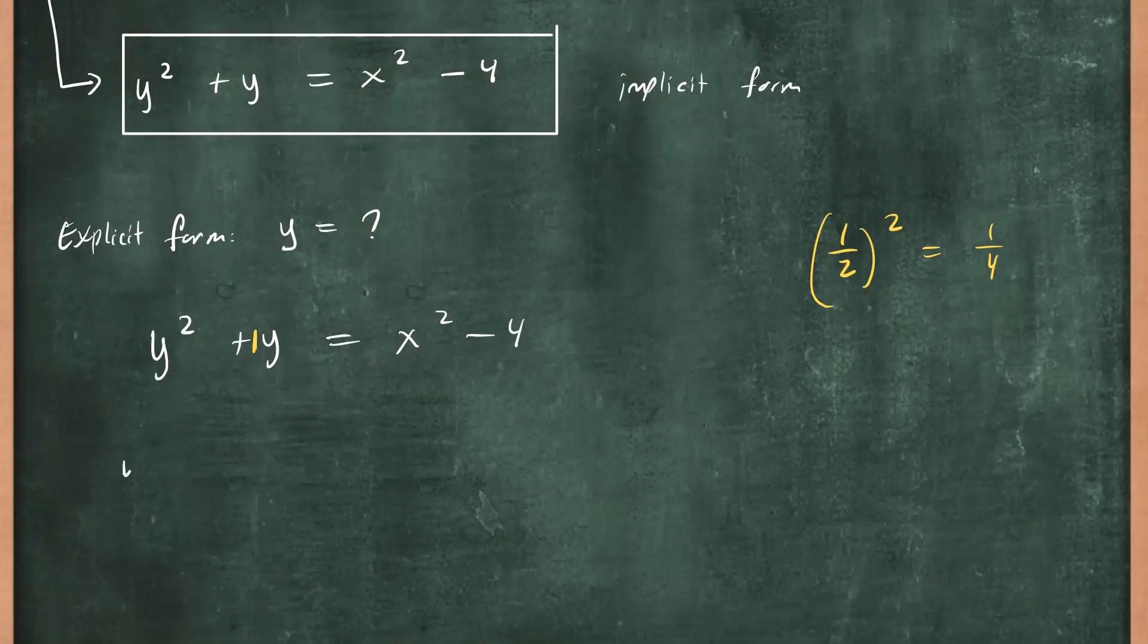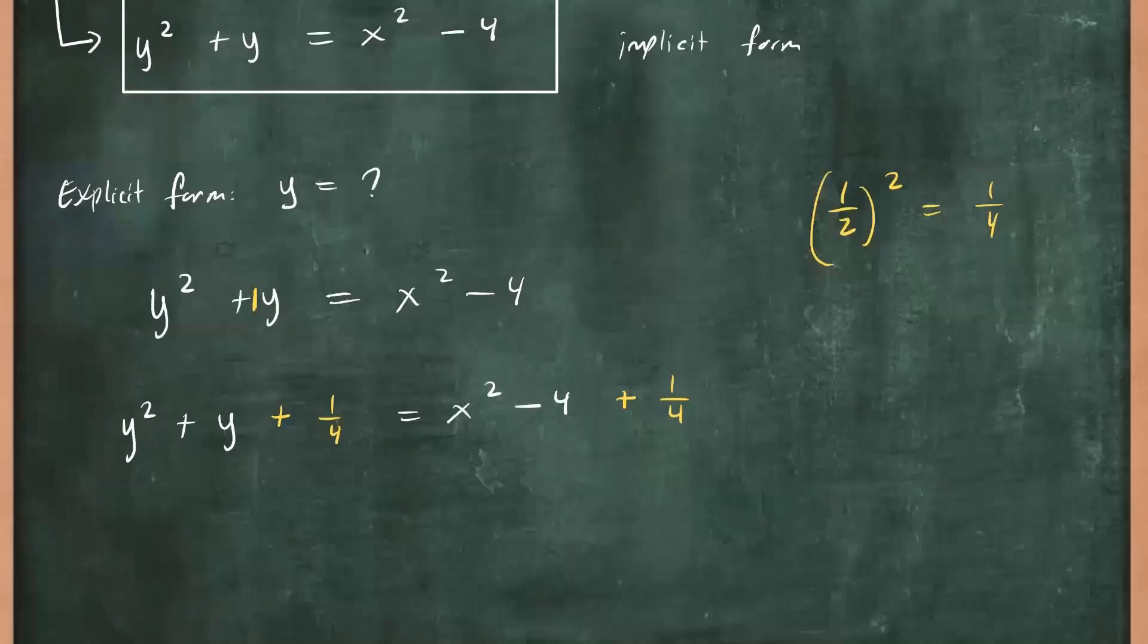So let's rewrite. You have y² + y, and now I'm going to add this extra term, which is (b/2)² - that's the formula - which is 1/4 in this case, and equals to everything from before x² - 4. Now since I added 1/4 to the left, I also need to add 1/4 to the right. So that's the procedure for completing the square.